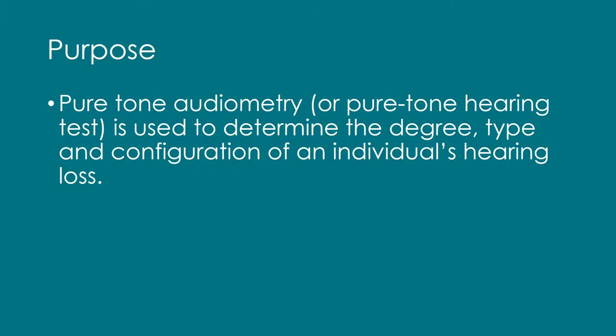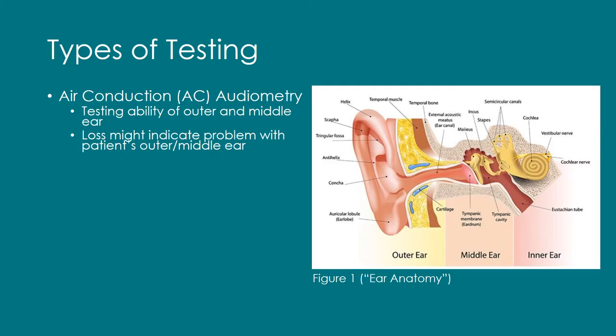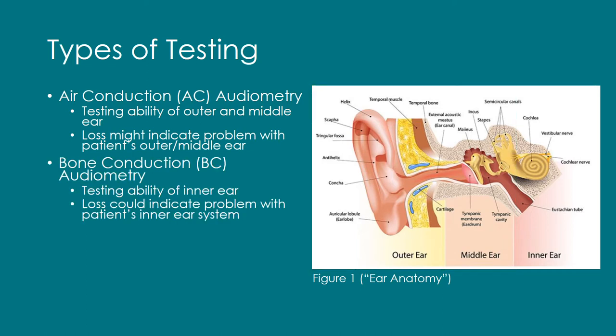The purpose of pure tone audiometry is to determine the degree, type, and configuration of an individual's hearing loss. Air conduction audiometry, or air conduction testing, is testing the ability of the outer and middle ear. If a loss is detected, then there might be a problem with the patient's outer or middle ear. Bone conduction audiometry is testing the ability of the inner ear, and if a loss is detected here, then it could be an issue with the patient's inner ear system.